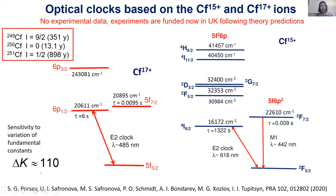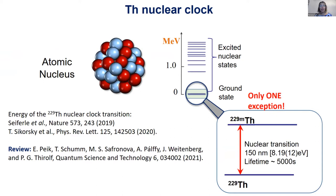The sensitivity to variation of fundamental constants is about 100 for those californium ions. Californium has a long-lived isotope with a half-life of about 1,000 years, and a zero-spin isotope with about 13 years — quite reasonable, since you only need one or a few ions in a trap. Thorium nuclear clocks are another avenue: thorium-229 has a nuclear isomeric transition at about 8 eV corresponding to about 150 nm, the only known nuclear transition within laser-accessible frequencies, with an enhancement factor of 10^4 to 10^5 for sensitivity to variation of fundamental constants.